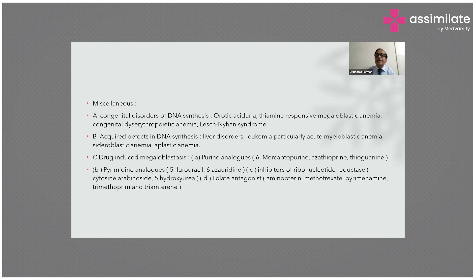Acquired defects in DNA synthesis occur in leukemia, liver disorders, particularly acute myeloblastic anemia, cytoplastic anemia, and aplastic anemia, all resulting in megaloblastic anemia. Drug-induced megaloblastosis can occur with purine analogs such as mercaptopurine, azathioprine, and thioguanine, also resulting in megaloblastic anemia.